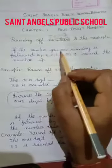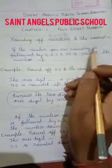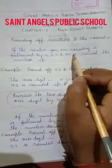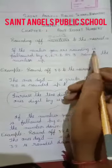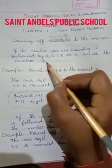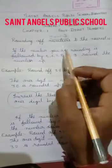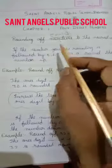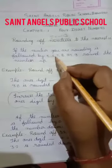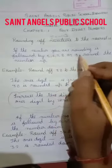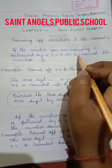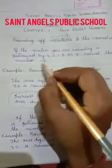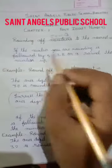If the number you are rounding is followed by 5, 6, 7, 8 or 9, round the number up. Students, when your 1's digit is 5, 6, 7, 8 or 9, round the number up — then your round is up.